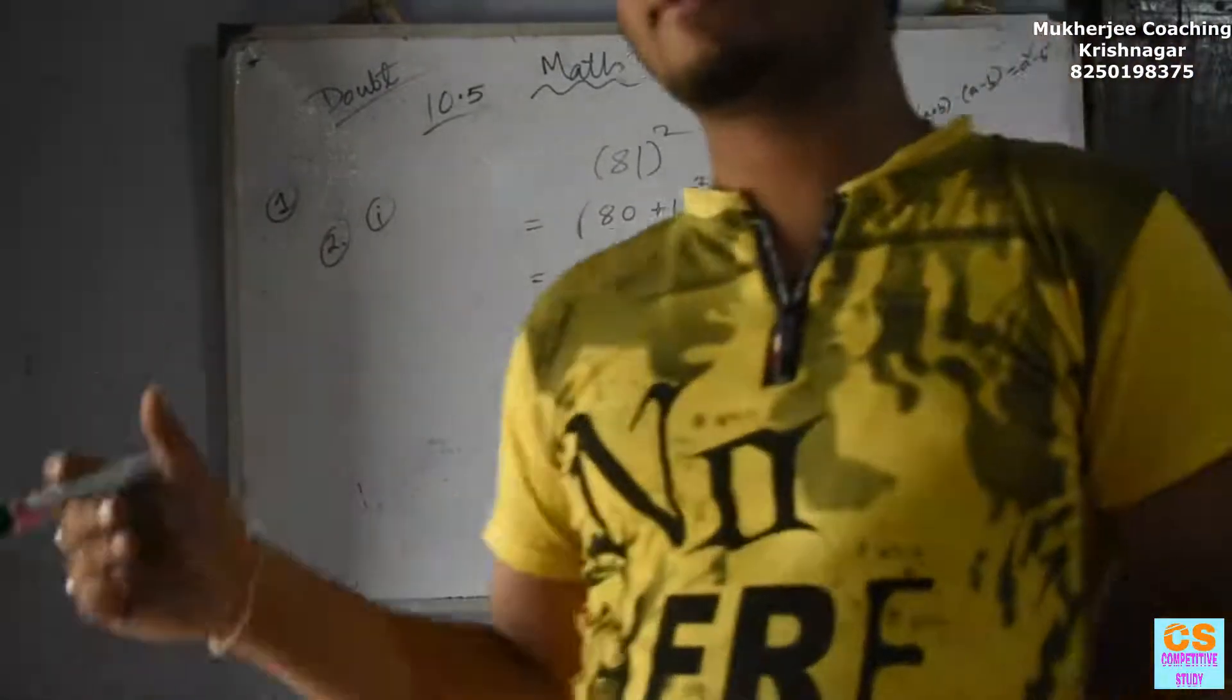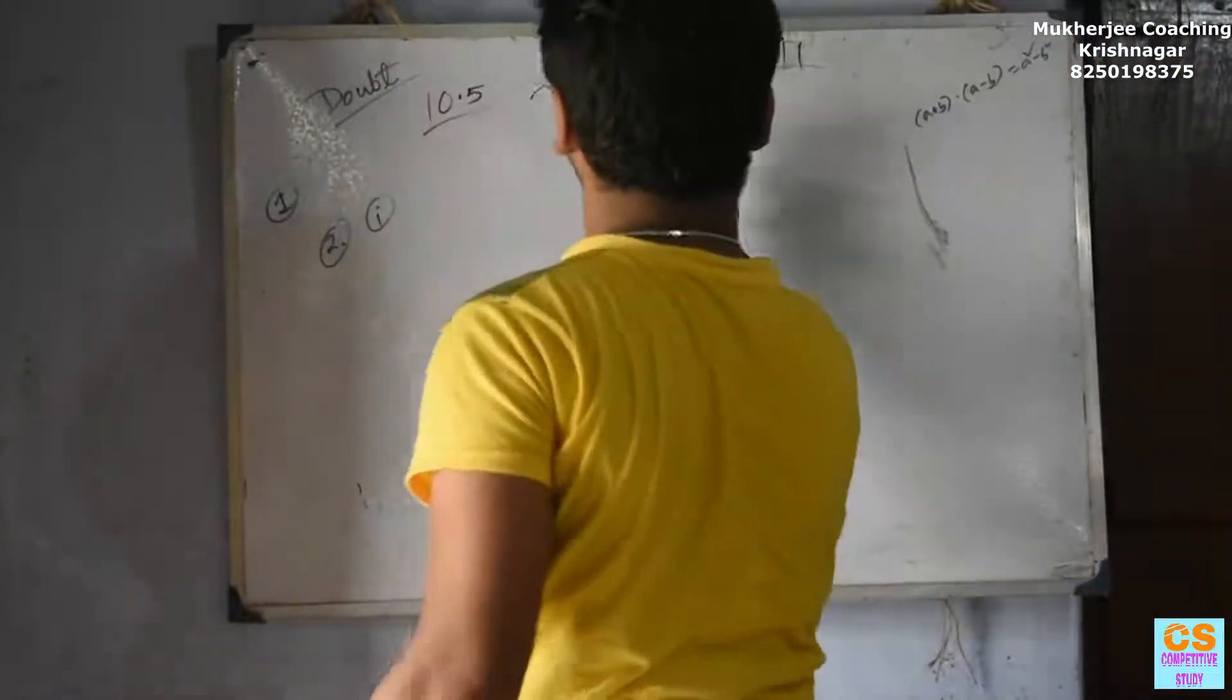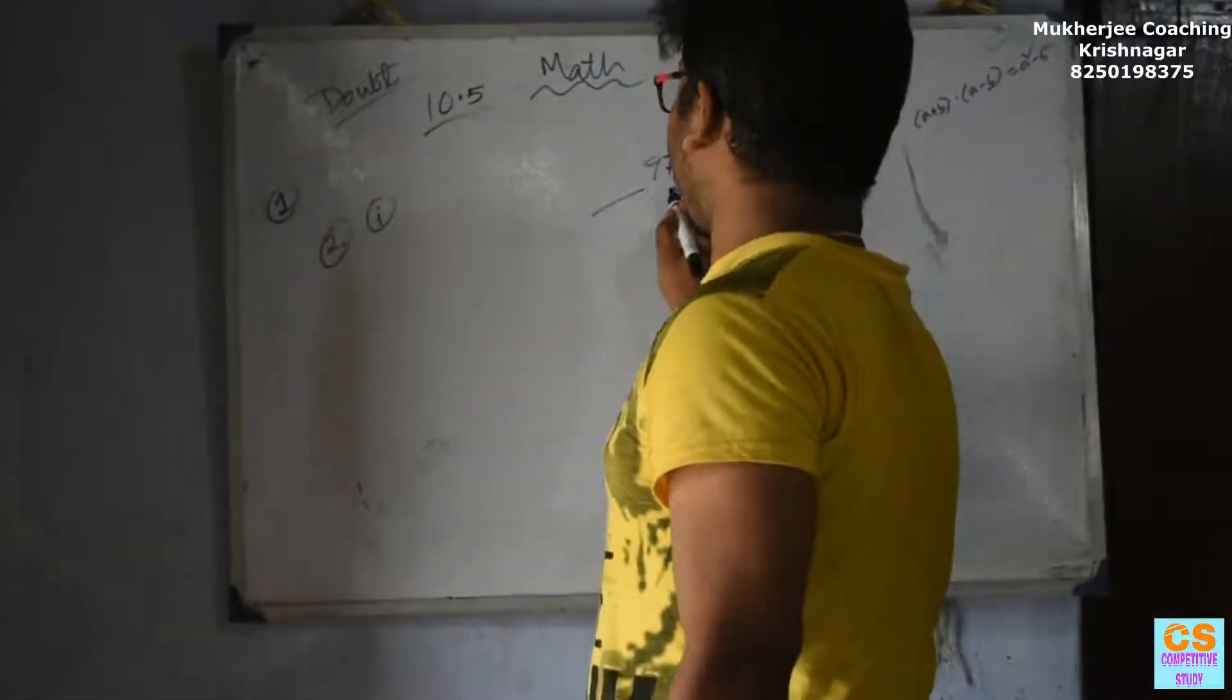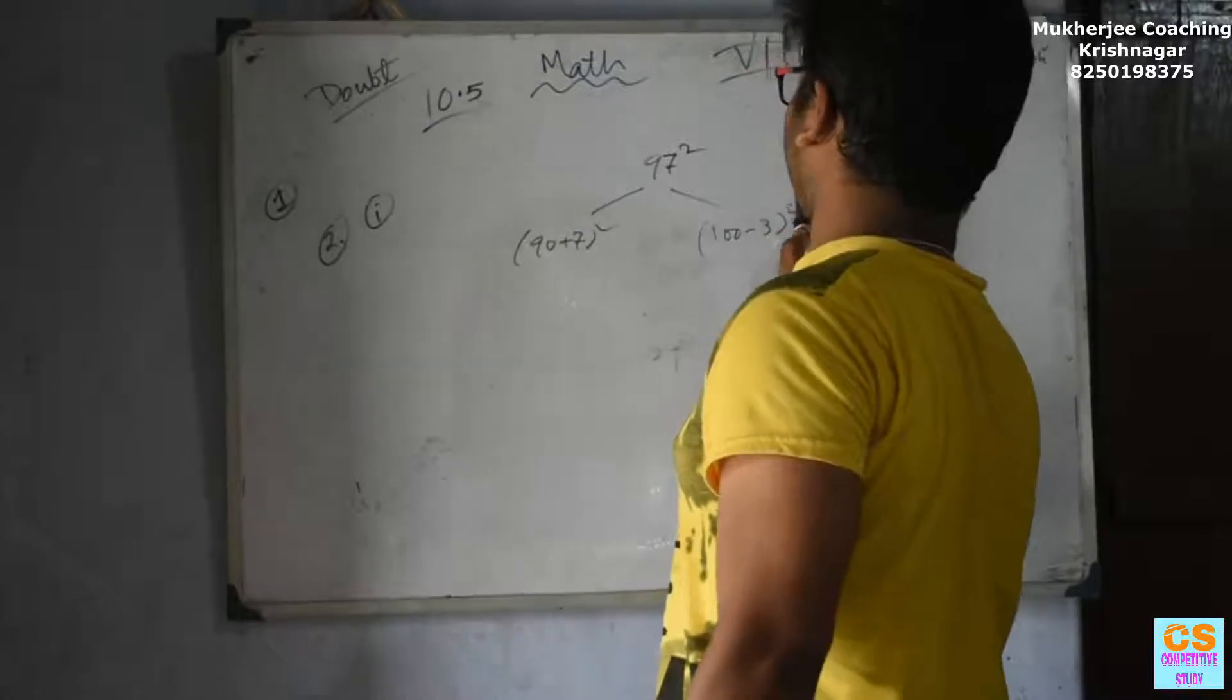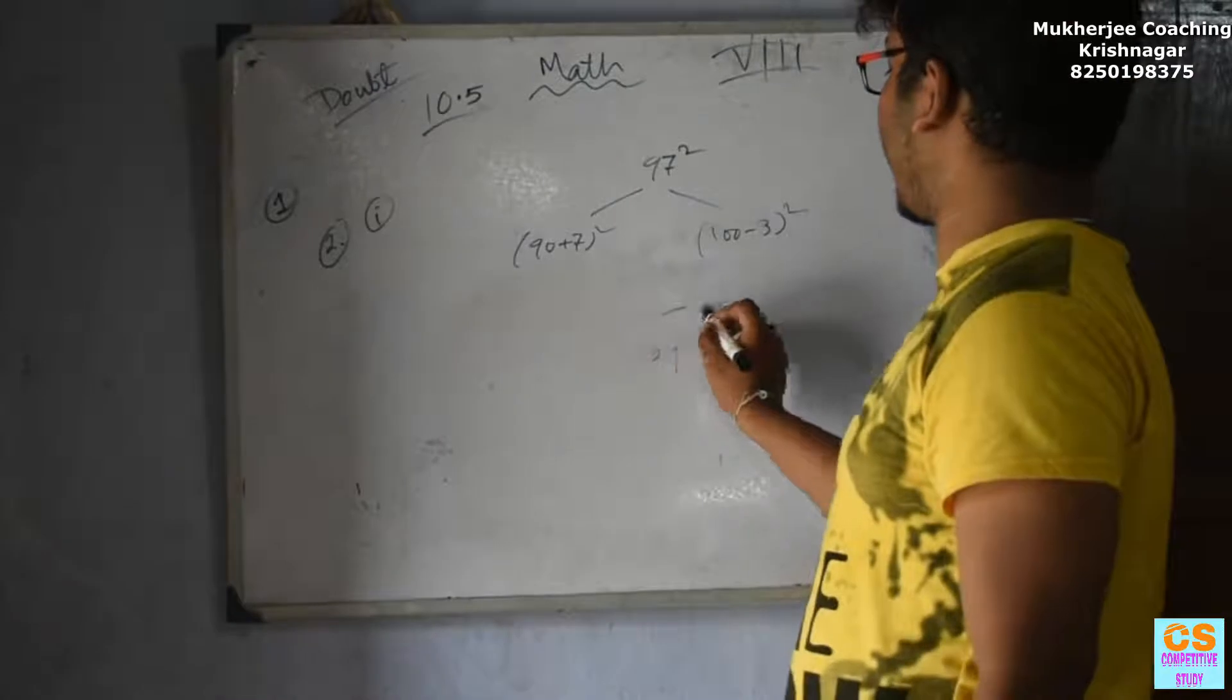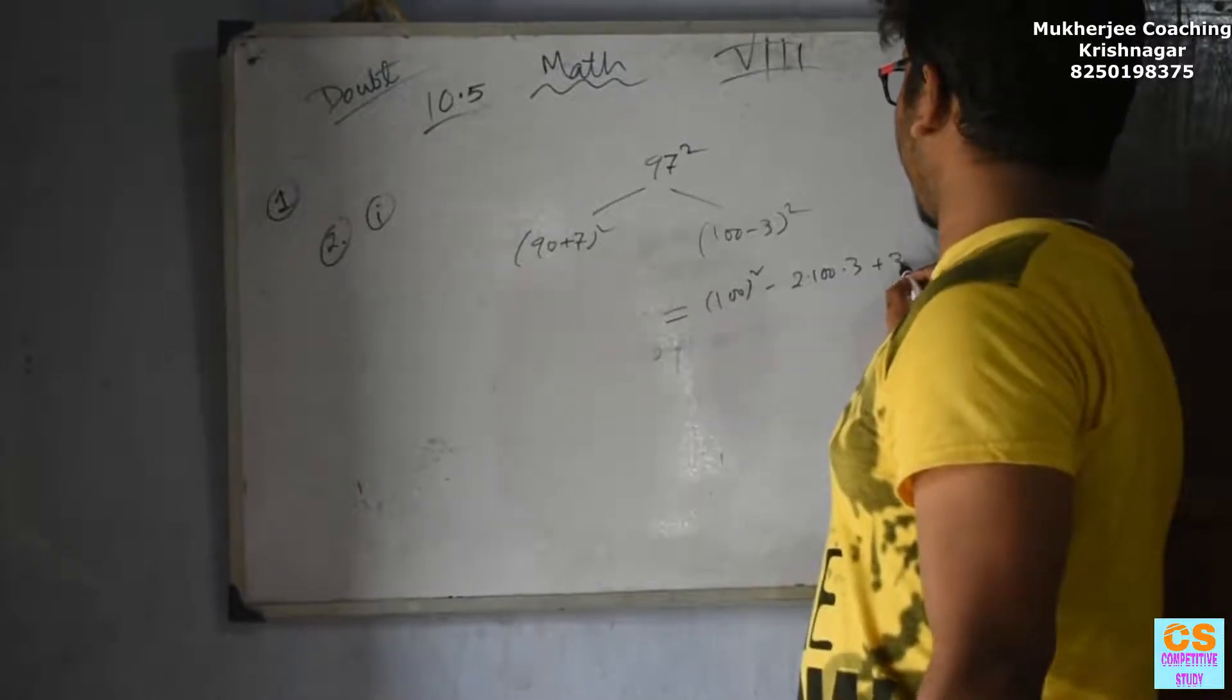Today, I am going to move on to 97 squared. We can write 97 squared as 90 plus 7 squared. I am going to write this as 100 minus 3. So 90 plus 7, 100 plus 3, 90 plus 7.